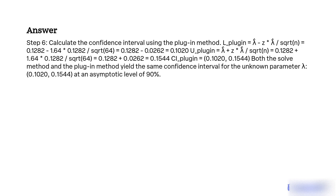Step 6: Calculate the confidence interval using the plug-in method. L_plugin = λ̂ - z × λ̂/sqrt(n) = 0.1282 - 1.64 × 0.1282/sqrt(64) = 0.1282 - 0.0262 = 0.1020.